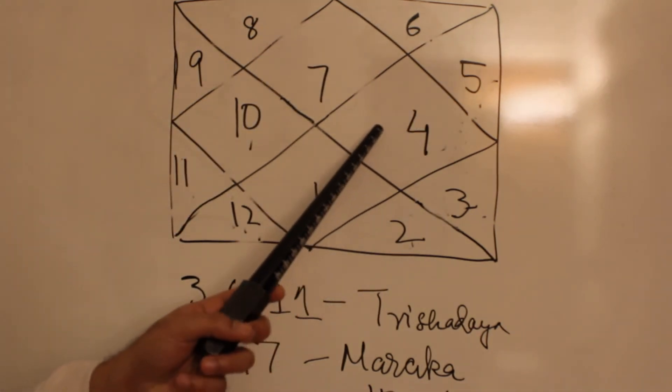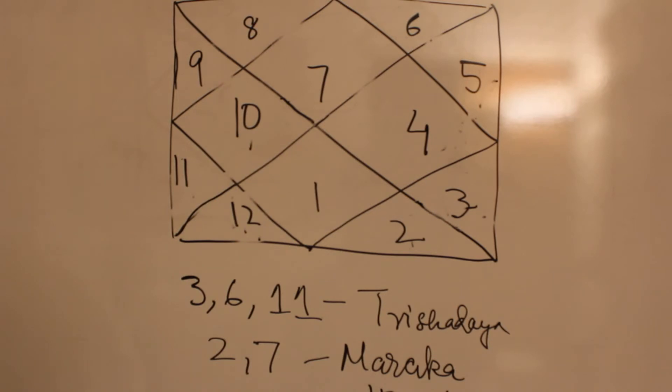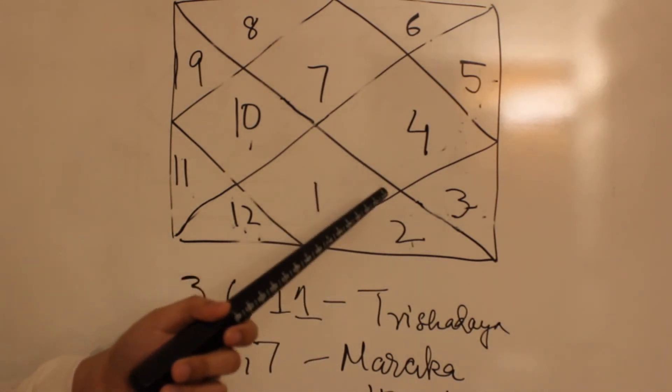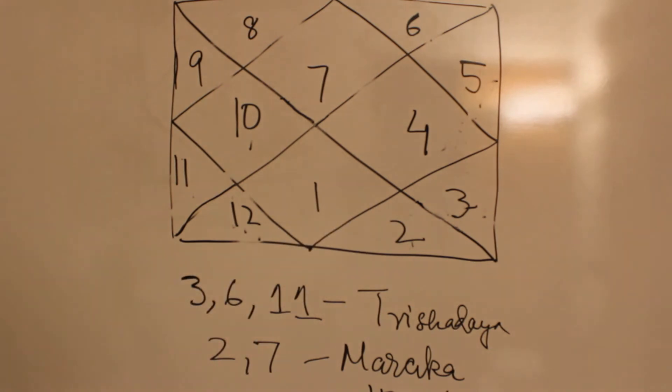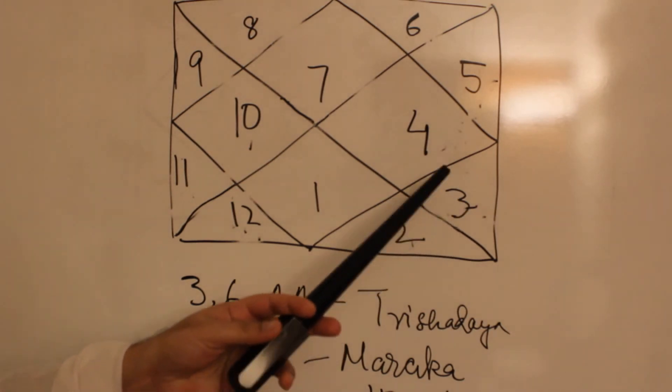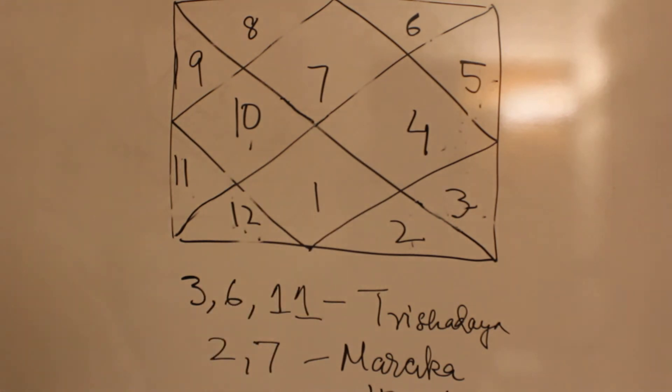Moon owns the tenth house, so it's neutral for this ascendant. It will be malefic or benefic based on how it's placed in the chart, plus it can form a raja yoga if it combines with Mercury.